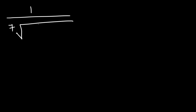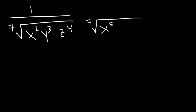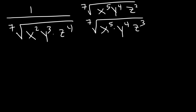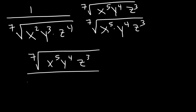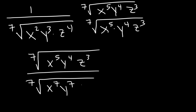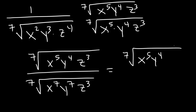Now what about this example: the 7th root of x squared y cubed times z to the 4th in the denominator? Go ahead and rationalize the denominator. We're going to multiply the top and the bottom by the 7th root of x to the 5th, y to the 4th, z to the 3rd, so we want the exponents to add up to 7. So on top it's the 7th root of x to the 5th, y to the 4th, z to the 3rd. On the bottom, 2 plus 5 is 7, 3 plus 4 is 7, and 4 plus 3 is 7. So this is the 7th root of x to the 5th, y to the 4th, z to the 3rd, all divided by x, y, z.